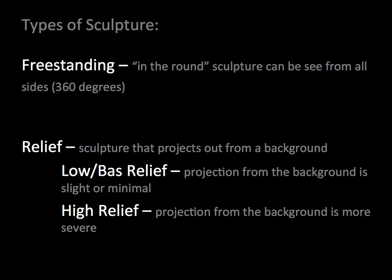Media of Art: Sculpture. With sculpture, this is the first of our two examples of three-dimensional art in our media section. There are basically two types of sculpture. There's the freestanding sculpture — this is probably the type we would think of first — also referred to as 'in the round.' It's a sculpture that can be seen from all sides; you can walk 360 degrees around it. That is differentiated from relief.